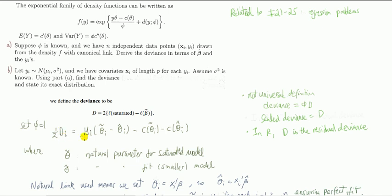You can see it's just like this, where I denote theta tilde as the natural canonical parameter for the saturated model, and theta hat to be the natural parameter for the fitted model, which is smaller than the saturated model.